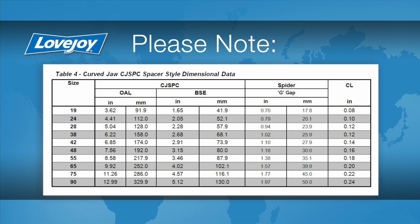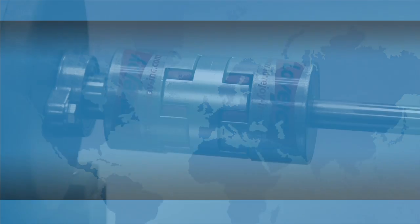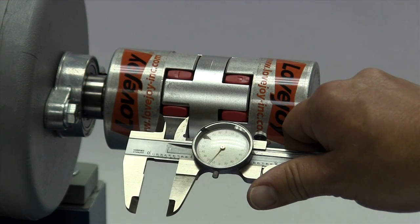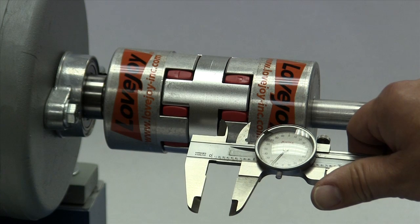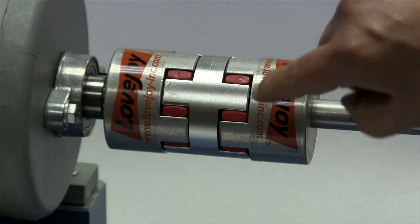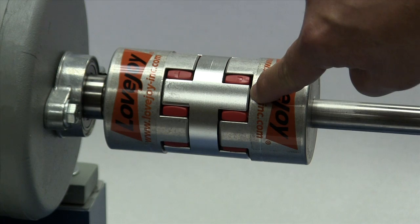The gap between the hub face and the face of the spacer can also be measured and should match the G or gap dimension within plus or minus 1/64th of an inch. The CL dimension is the clearance between the end of a jaw and the face of the opposing hub.